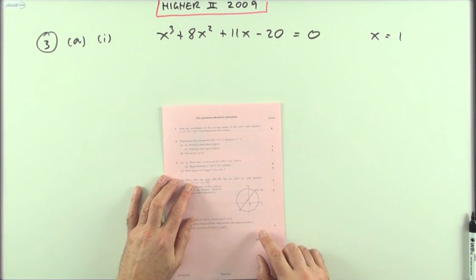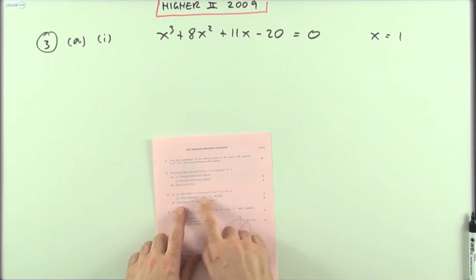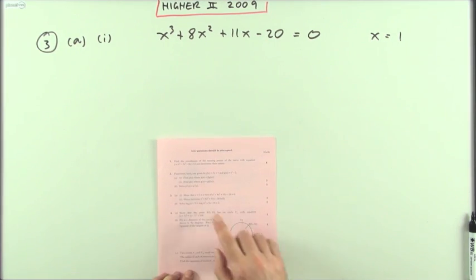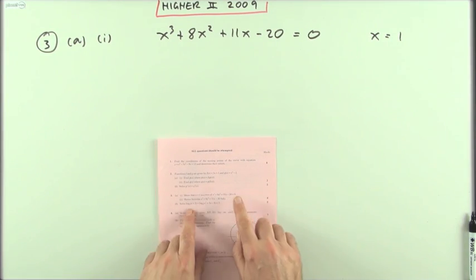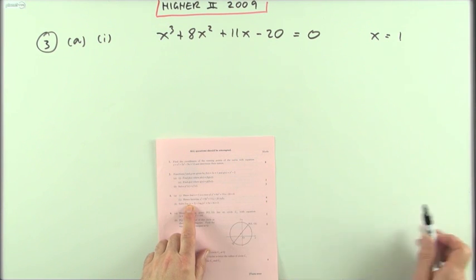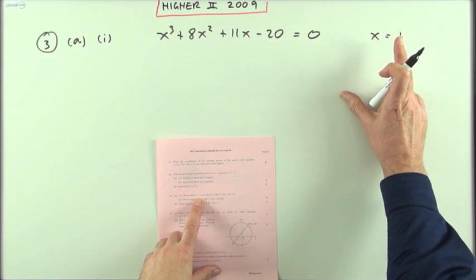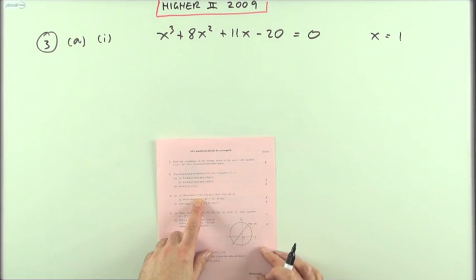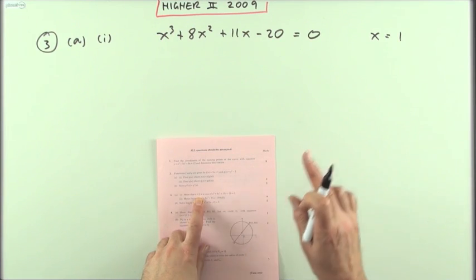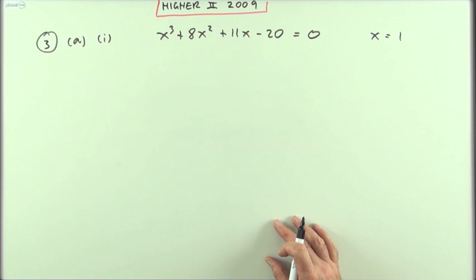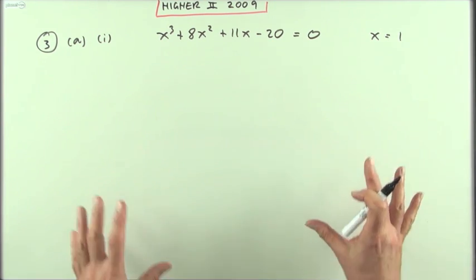Number three from the 2009 Higher paper - the cubic expression, polynomial question with factorization. This is slightly different from the ones you normally do because this one starts off saying show that this is a root. Quite often they start showing a factor then fully factorize, but this says show it's a root and hence factorize. So there's a couple of ways of going about it.